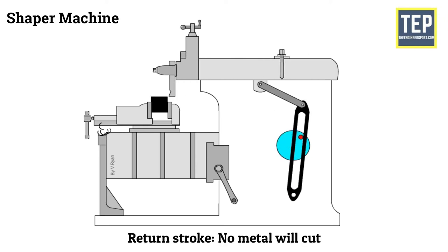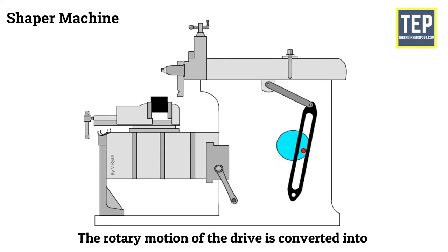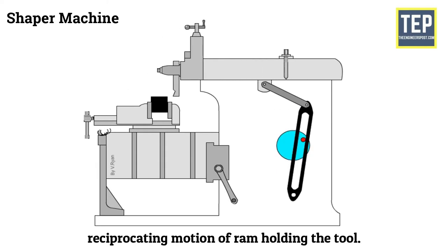During the return stroke, no metal will cut. In the Shaper Machine, the rotary motion of the drive is converted into reciprocating motion of RAM holding the tool.